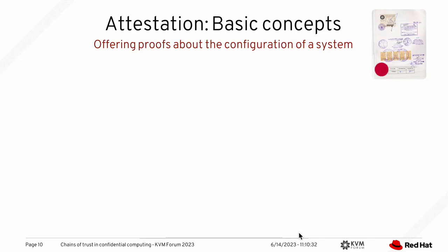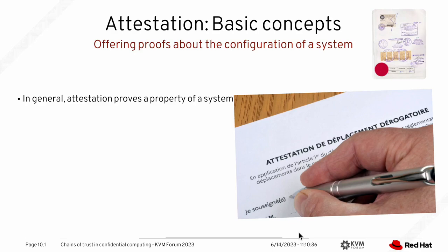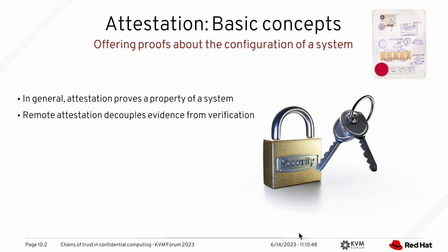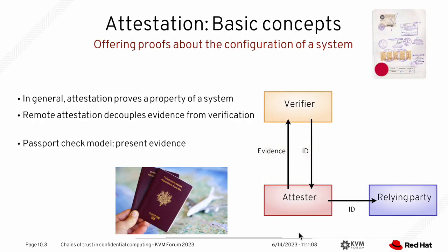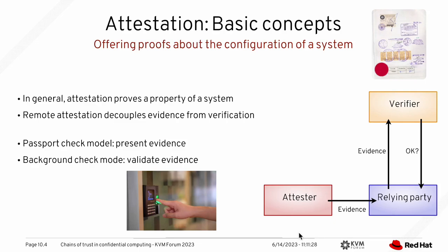Attestation is really offering some kind of proofs about the configuration of a system. In general, not just for Confidential Computing, attestation proves some property of a system. When we talk about remote attestation, we decouple the evidence from verification — like a lock and key, where the key is separate from the lock. There are two big models: the passport model, where you present evidence given by the verifier to the relying party — like presenting a passport, which is what Microsoft Azure does for most secrets — and the background check mode, where you validate the evidence directly in the relying party.